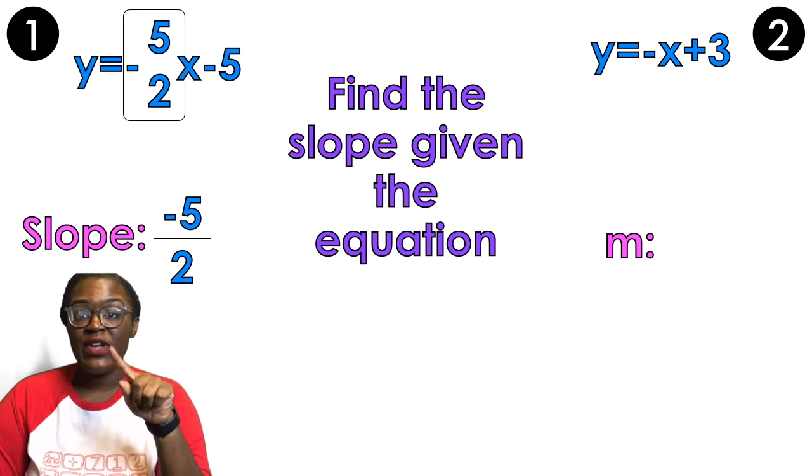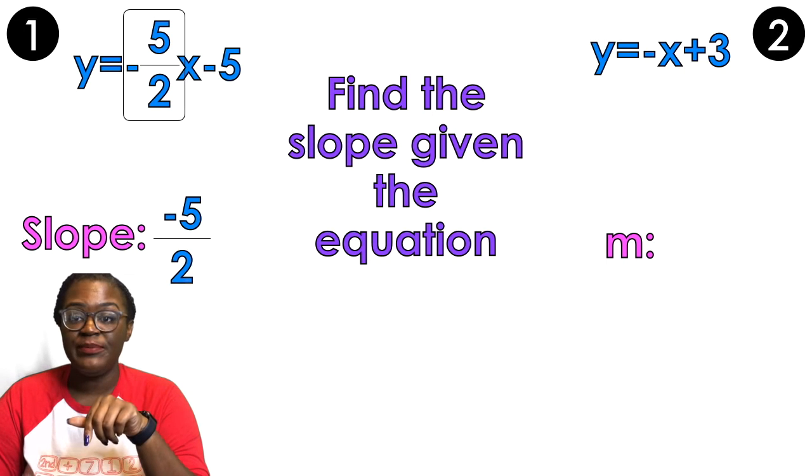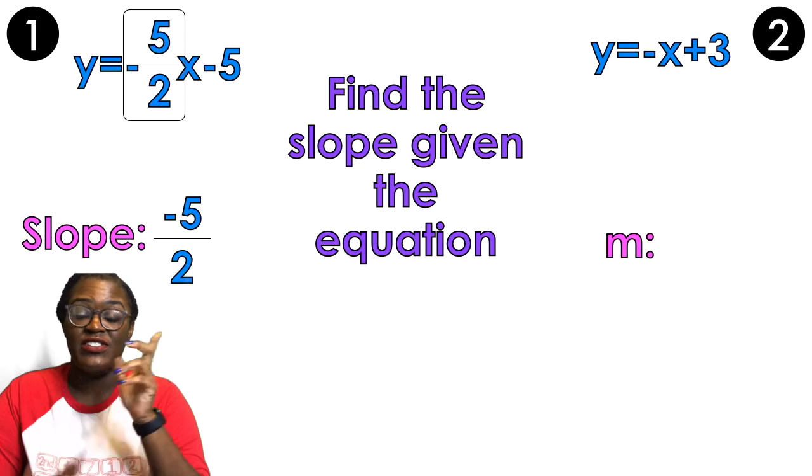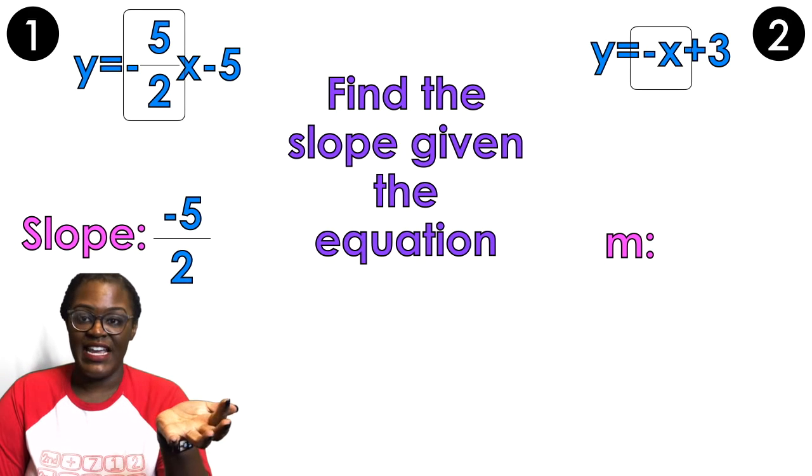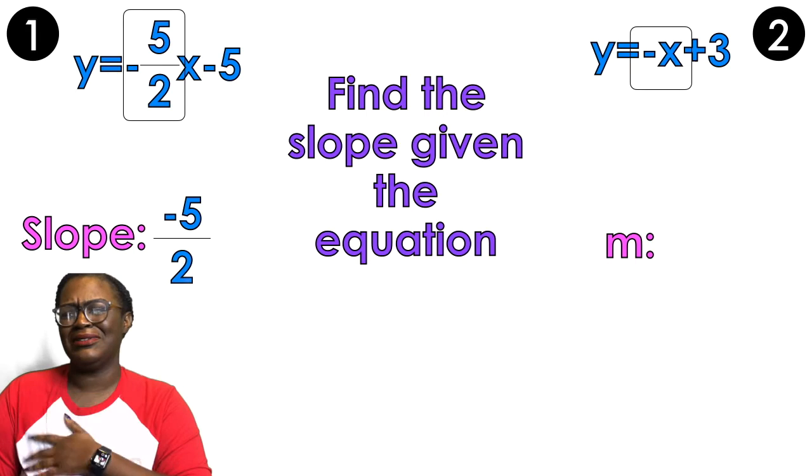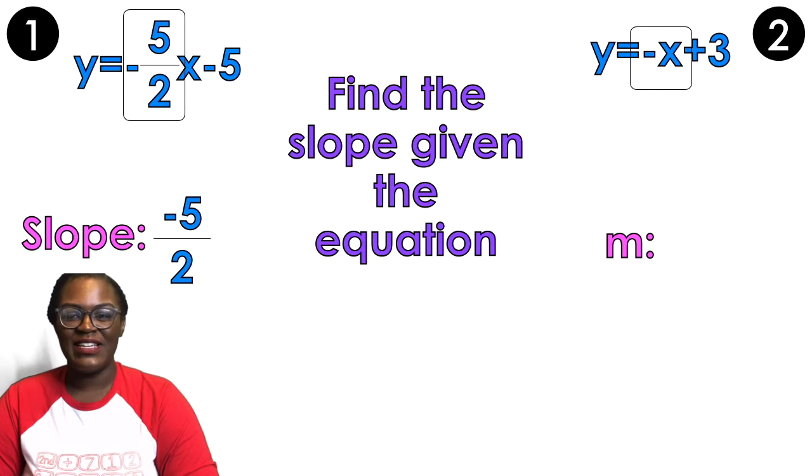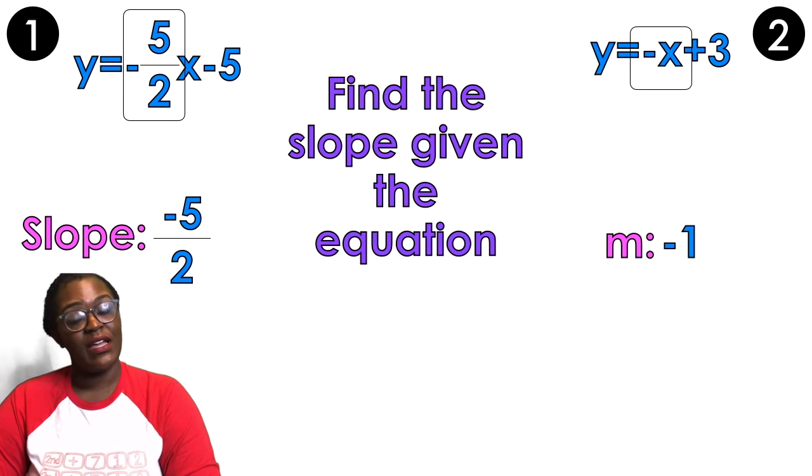Example number 2, you have Y equals negative X plus 3. And it's the number attached to the X, touching it. So there's a negative. What's that number? It's a negative 1. So that's example 1 and example 2. Ta-da!